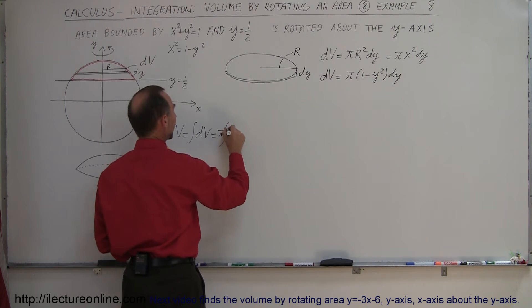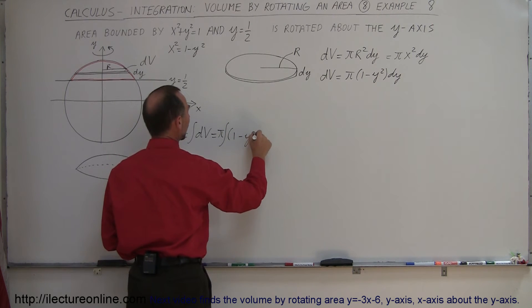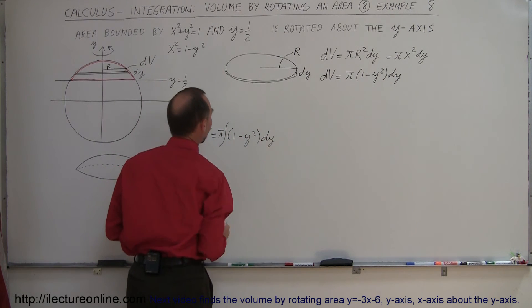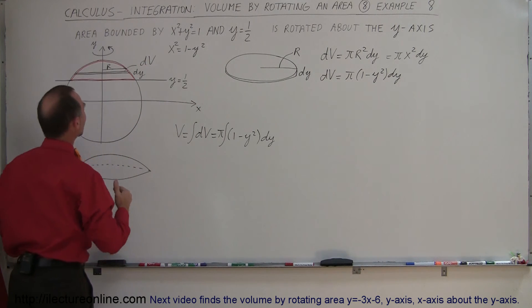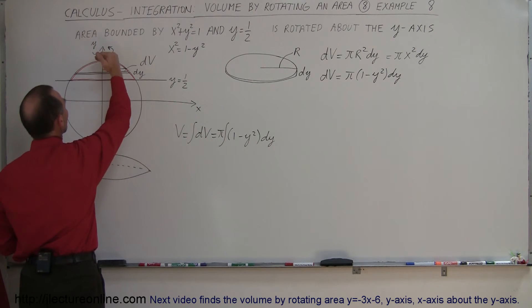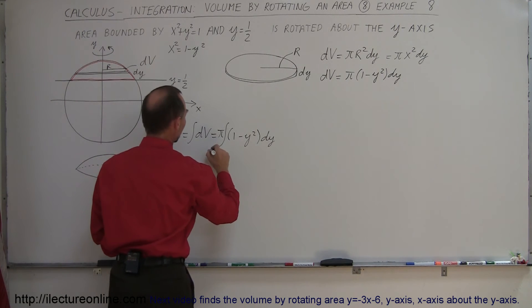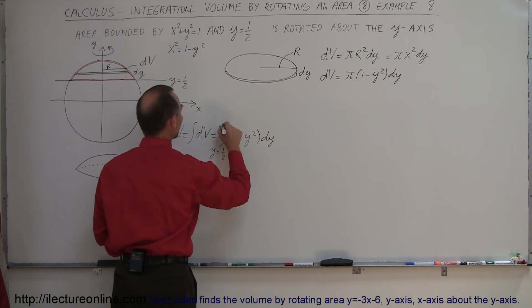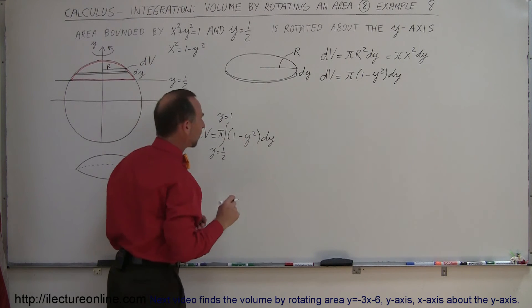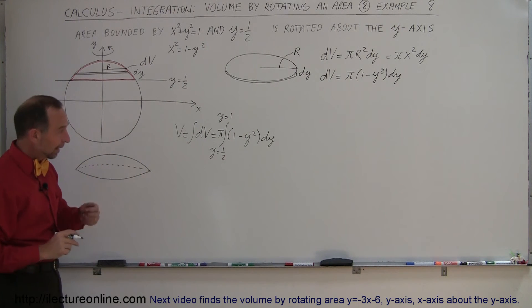Therefore, V is equal to the integral of all the little dV's, which is equal to the integral pi times 1 minus Y squared dy. The limits of integration, I'm going to integrate from here to there, so that would be from 0.5 all the way up to Y equals 1. From Y equals 1 half to Y equals 1 are the proper limits in this case.